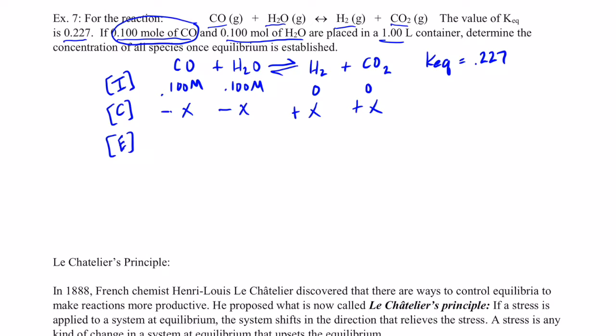The hydrogen and carbon dioxide will go up by that amount, plus x and plus x, because it's also a one to one ratio. So at equilibrium, we have 0.100 minus x, 0.100 minus x, x and x.